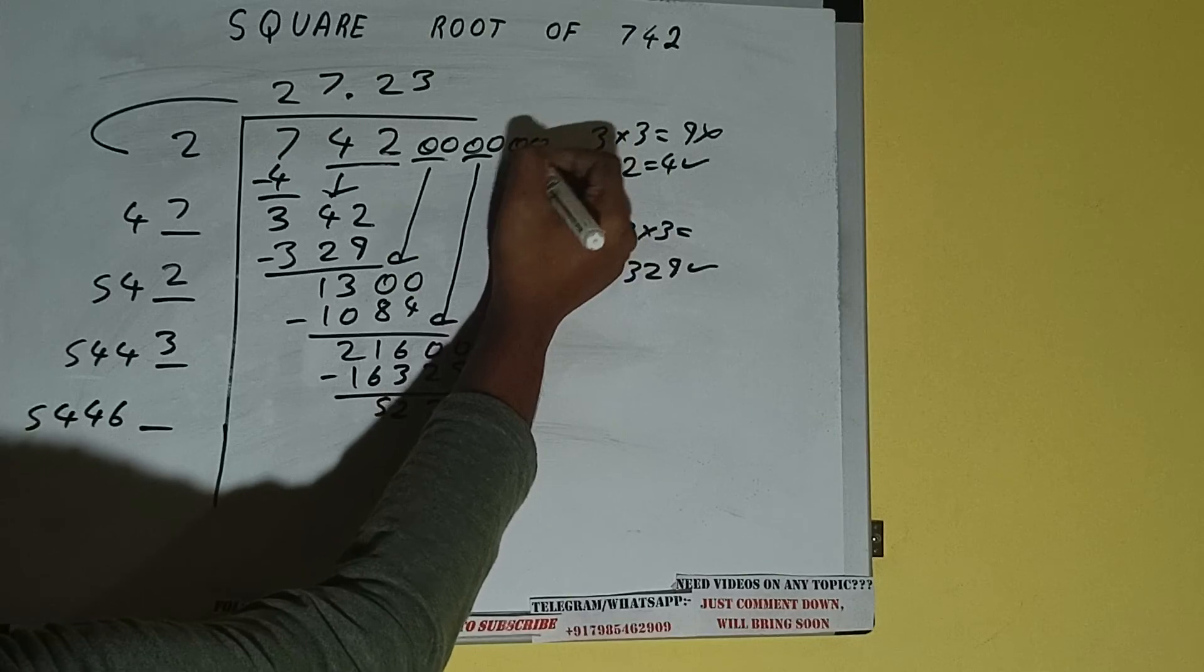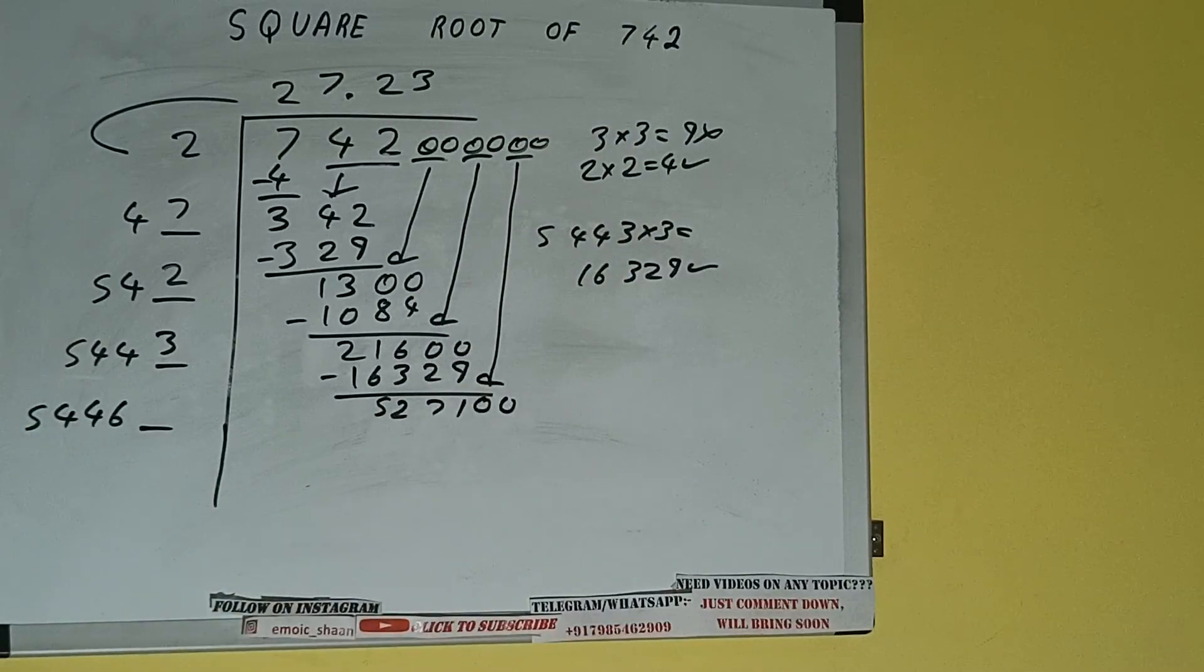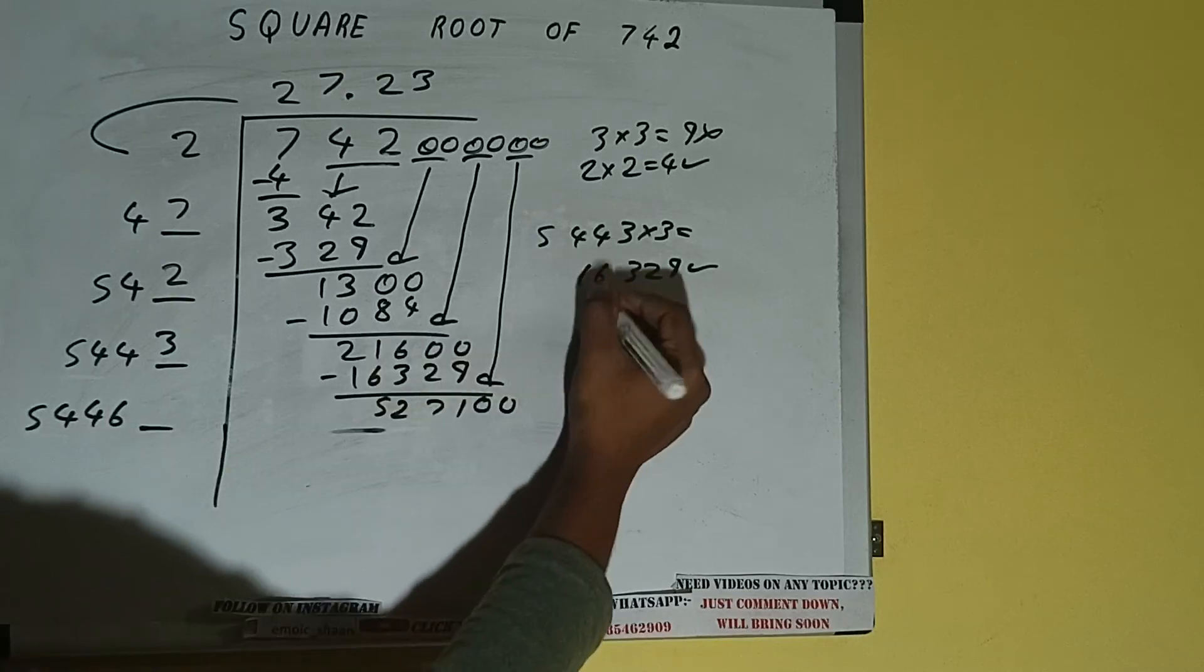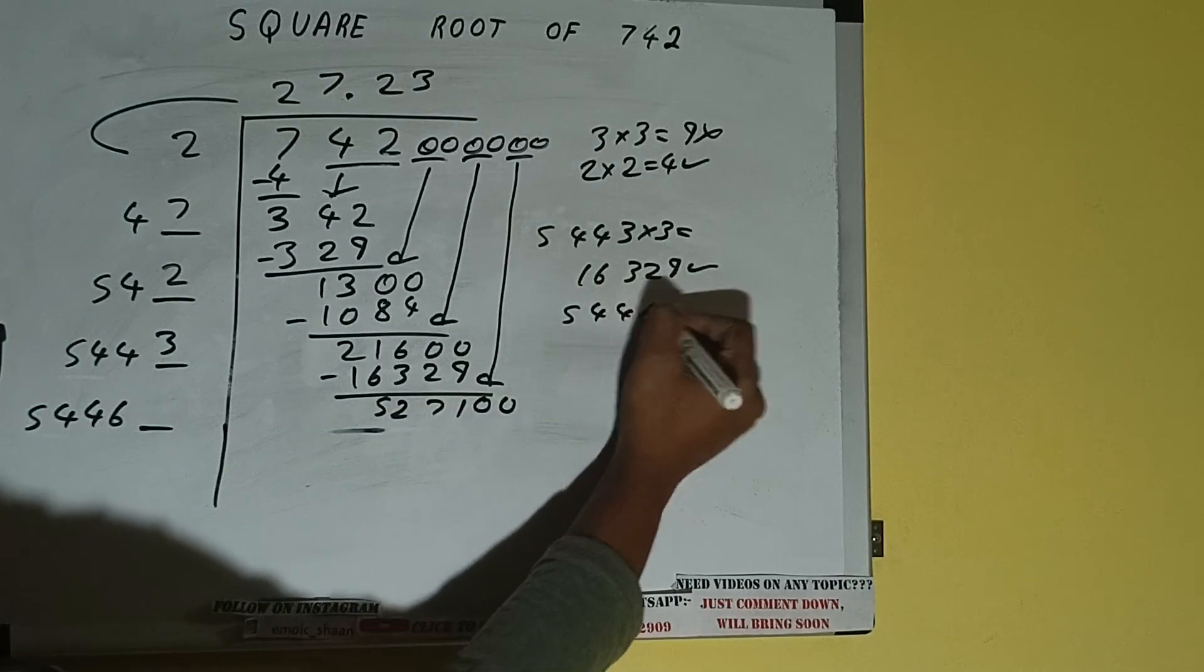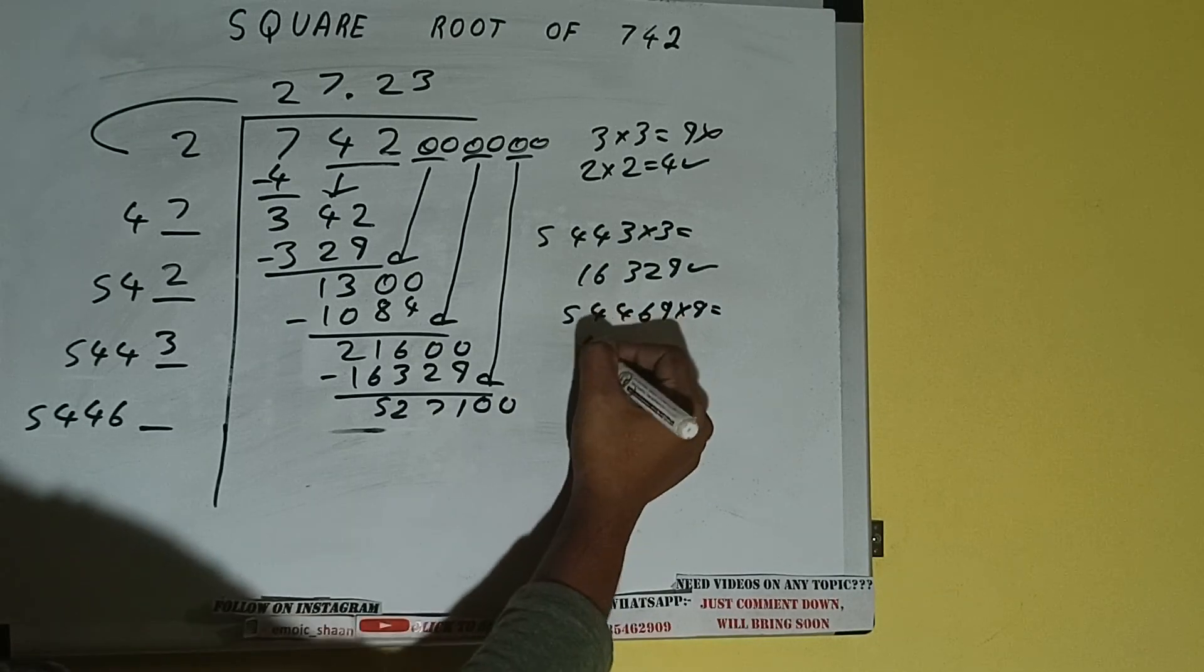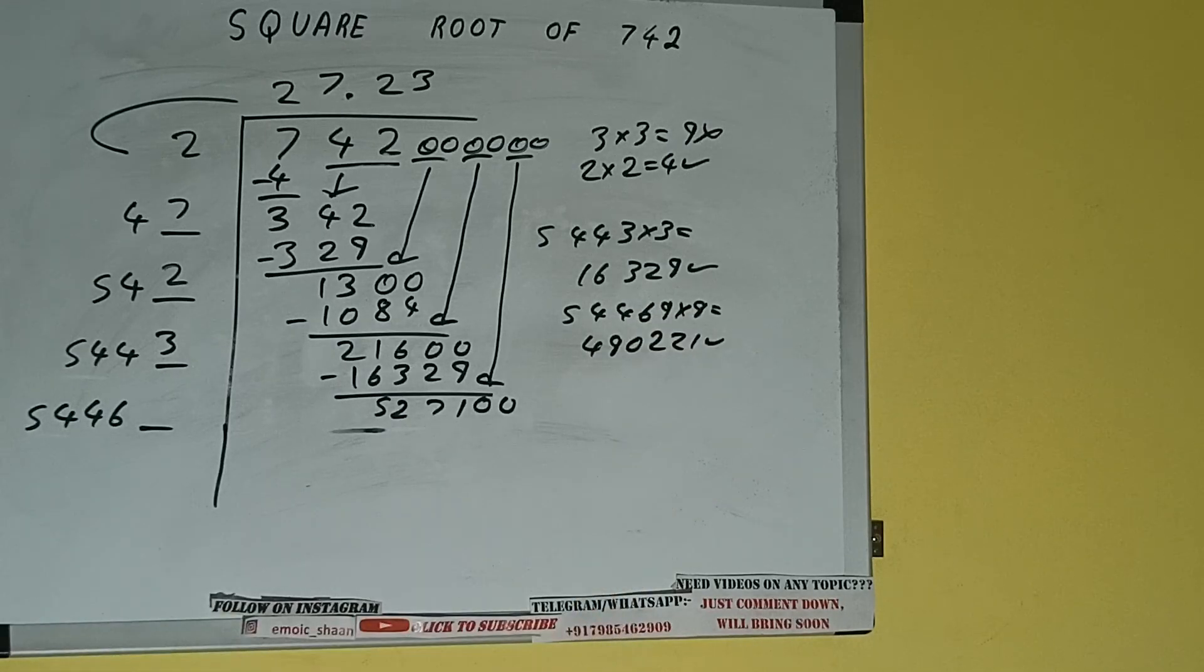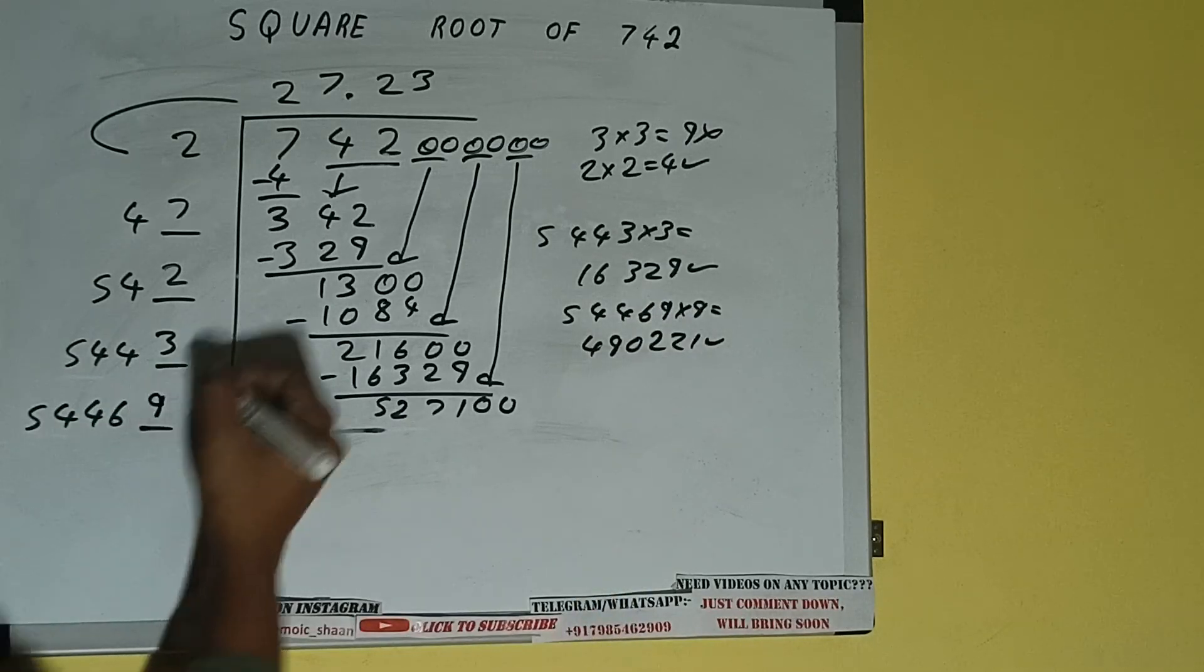And this number we need to make it big, so bring the next pair of zeros down and it will be 527100. Now compare this 54 and 527, so we can try 9 times. So 54469 into 9 we can try, and we'll be getting 490221 which is good to take.